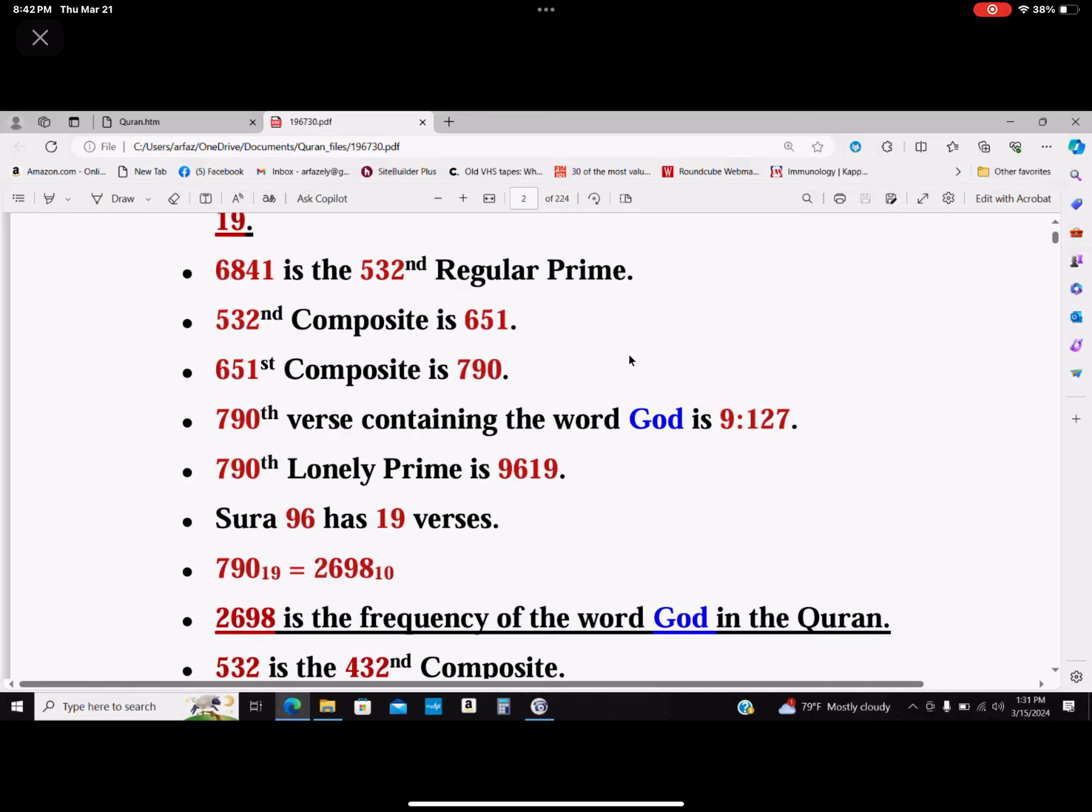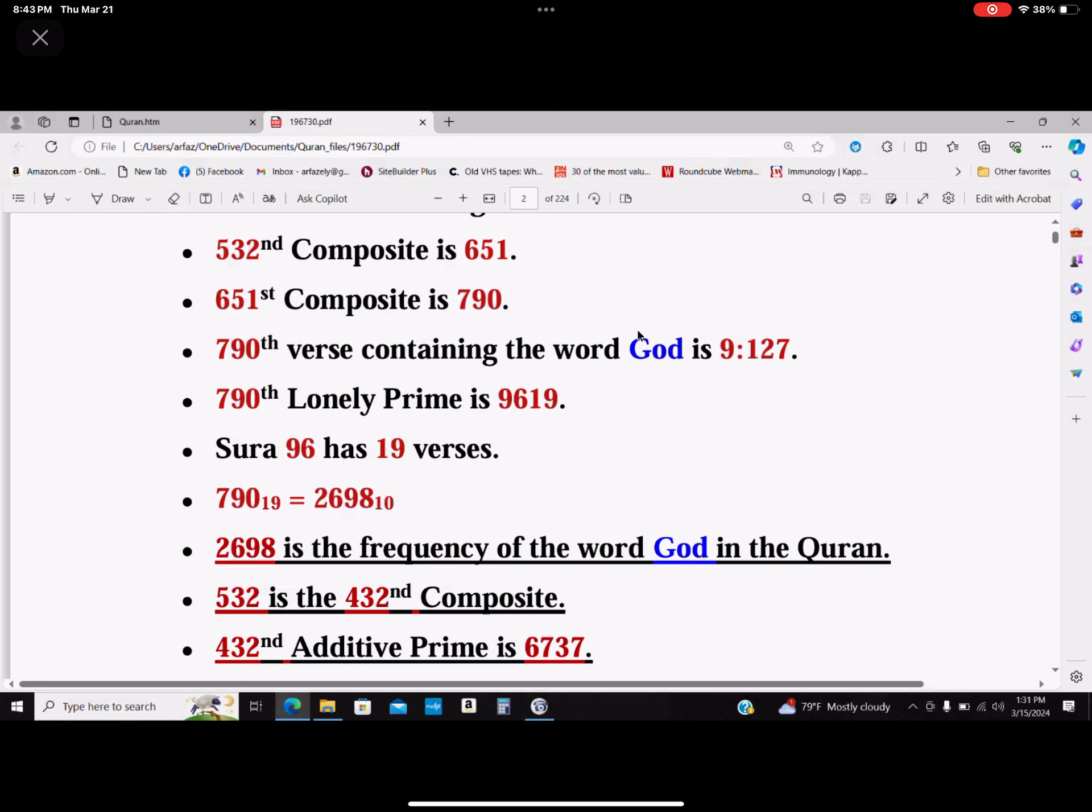790 in base 19 is 2698 in base 10. 2698 is the frequency of the word God in the Quran.